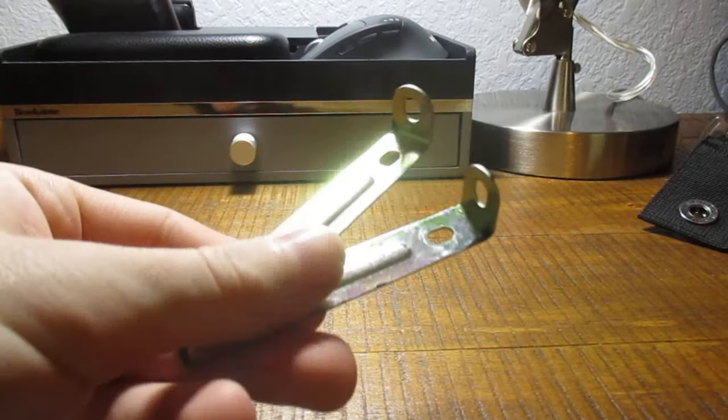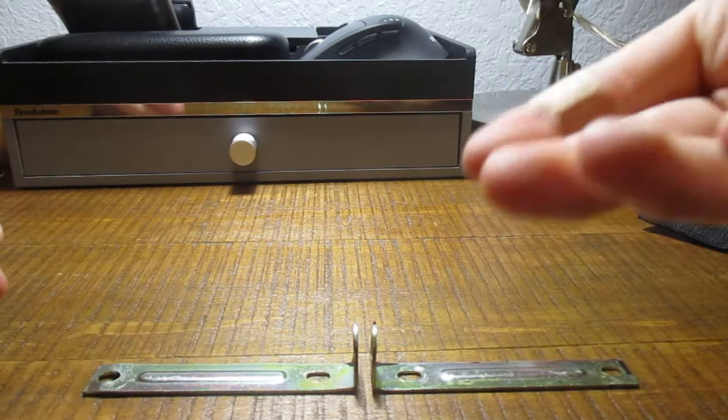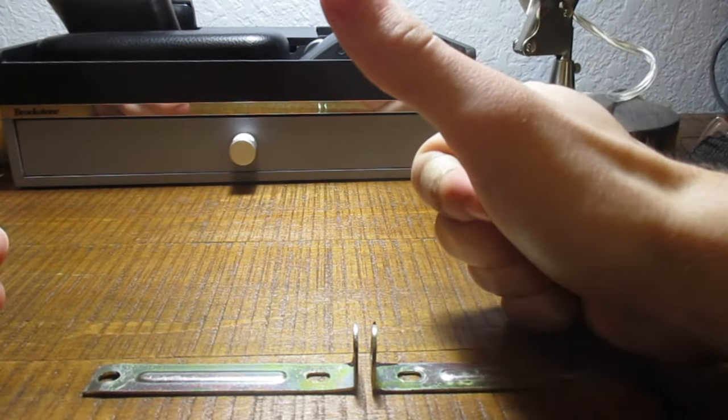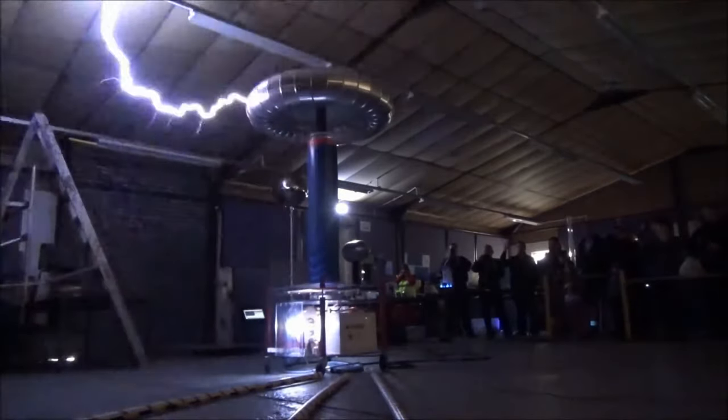Static spark gaps are by far the easiest to build, since all you have to do is place two pieces of metal close enough together to allow the transformer to arc across them. This kind of spark gap is good for small coils, but it has its downsides when it comes to larger coils.